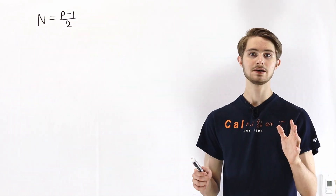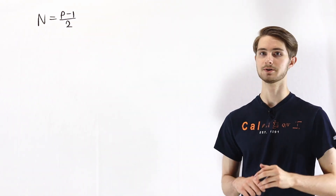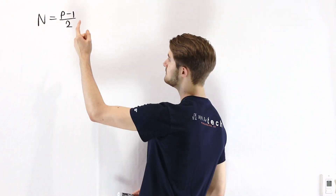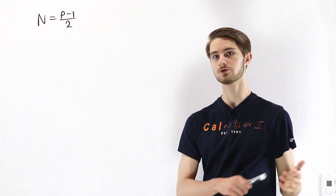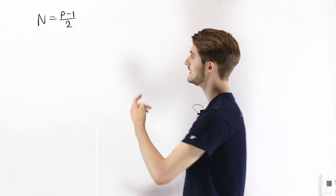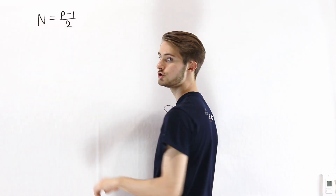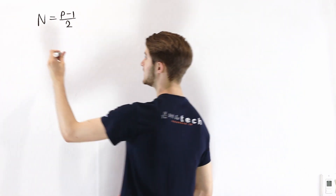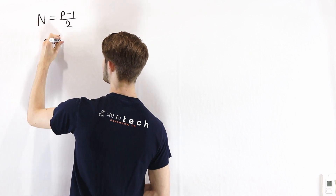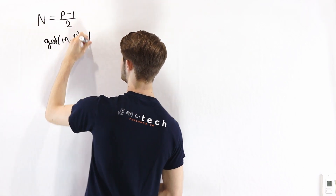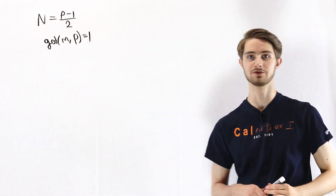To start, we'll let p be some odd prime number. And since it's odd, we know that p minus 1 will be even, and therefore p minus 1 over 2 will be an integer. So we'll call that integer n. We'll also define another integer m, which we say is co-prime to p, meaning m is not a multiple of p.